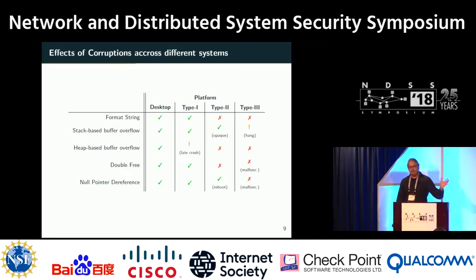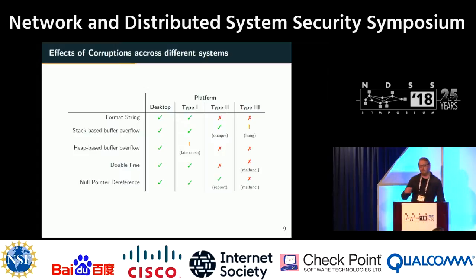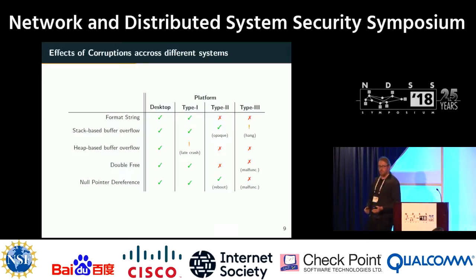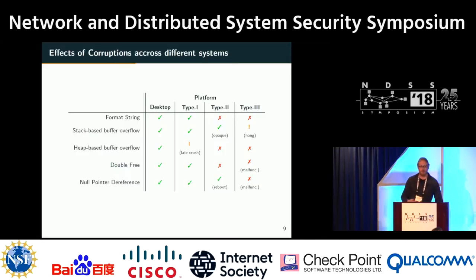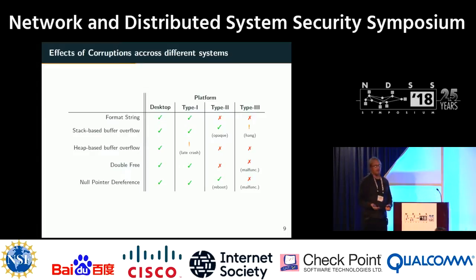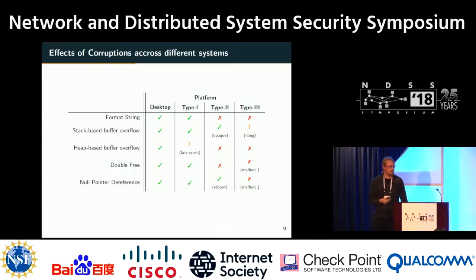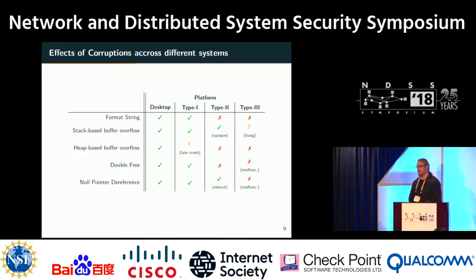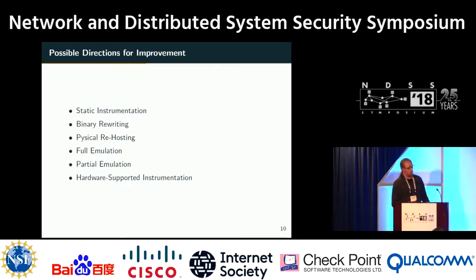From this study we obtained a table where green check marks mean an observable crash occurred, and red crosses mean we couldn't detect the crash — the device just continued running even though we triggered the corruption. Sometimes we observed ambiguous behavior, such as hangs or crashes occurring much later in execution. The takeaway is: the further toward the embedded side we go, the more frequent silent memory corruptions become.